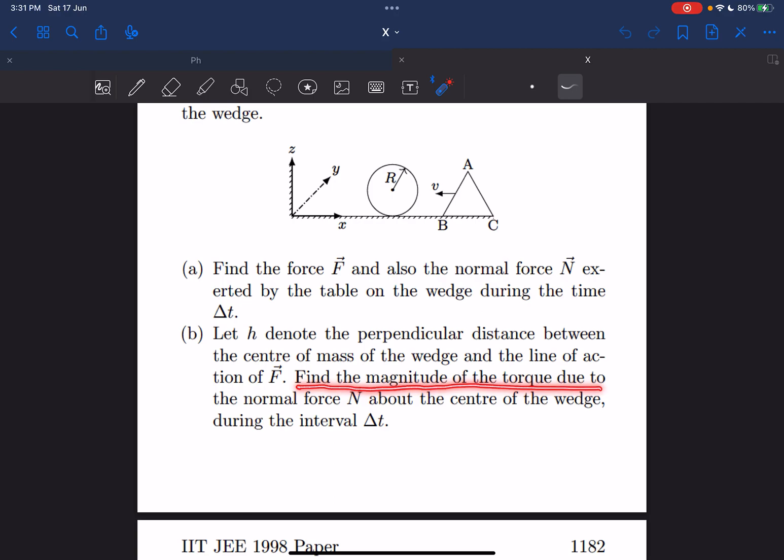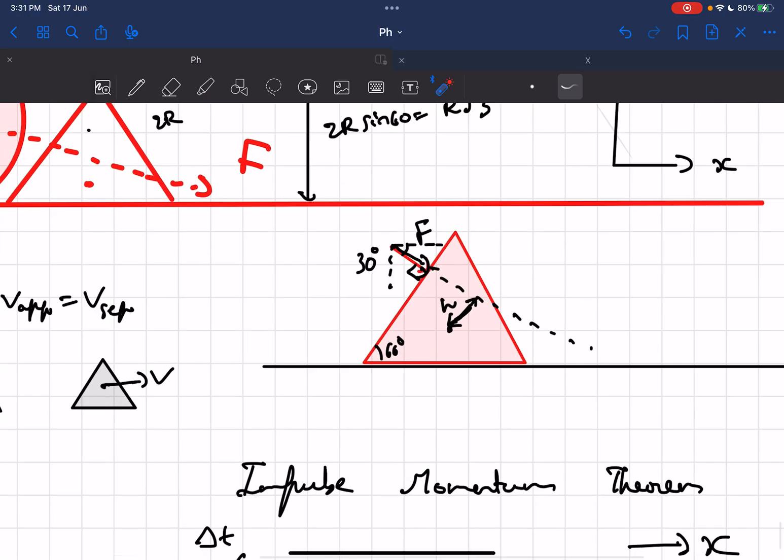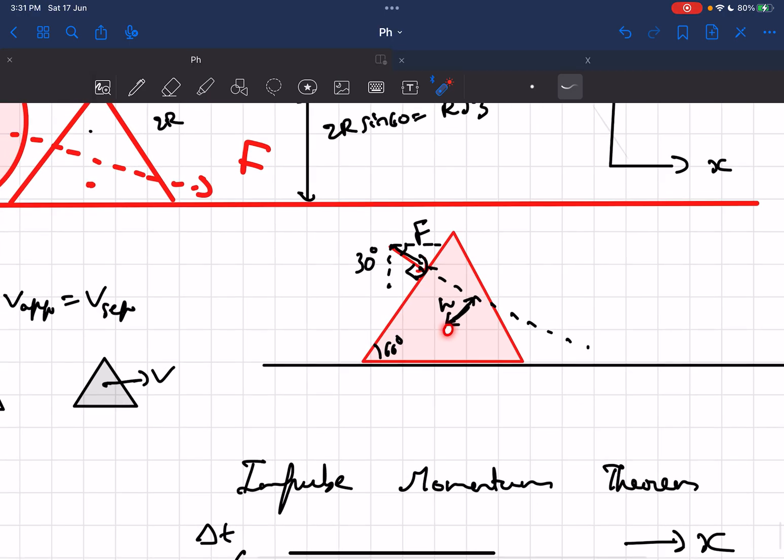So we need to calculate the torque due to normal about the center. Now why? Initially the normal was just like this. The line of action of normal passed through the center. Now why would the normal shift towards the right? It's because if you observe this condition from the center of mass, and let's say the normal and mg were along the line of action.